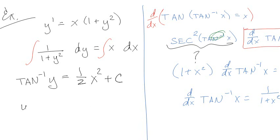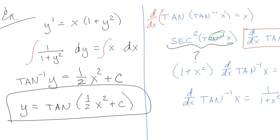Okay. So the next thing I want to do is I want to say that y is equal to the tangent of 1 half x squared plus C. And that's my answer. Yay! All done. That was fantastic.